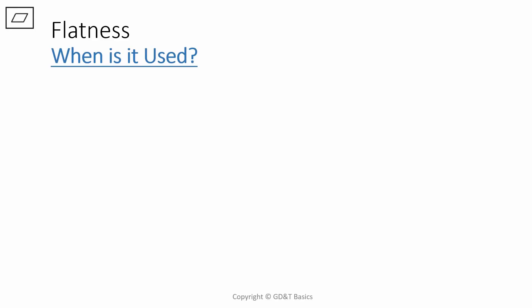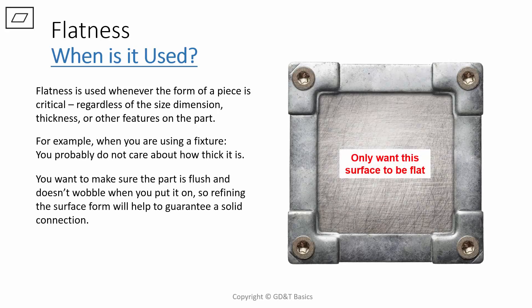Let's talk about where flatness is used. Flatness can be applied whenever the form of a piece is critical, regardless of the size dimension, thickness, or other features on the part. For example, if you are using a fixture, you probably don't care how thick it is. You want to make sure that the part is flush and doesn't wobble when you put it on. So refining the surface form will help guarantee that you have a solid connection without constraining any of the other details on the part, especially if you are just setting the part on top of it.